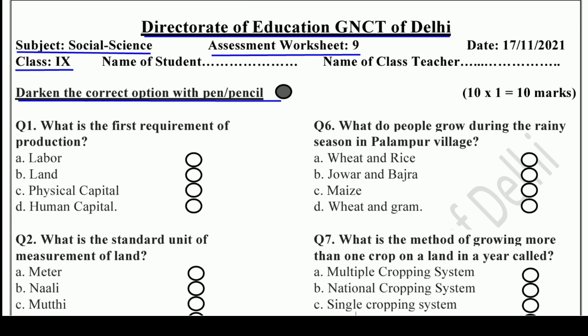First question: What is the first requirement of production? Options are: Labor, Land, Physical capital, or Human capital. The right answer is B — Land. So you have to choose and circle option B.